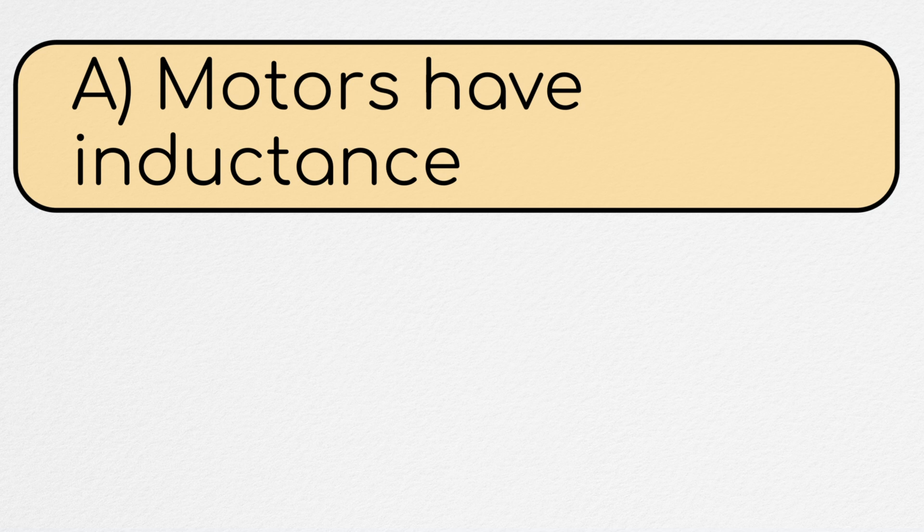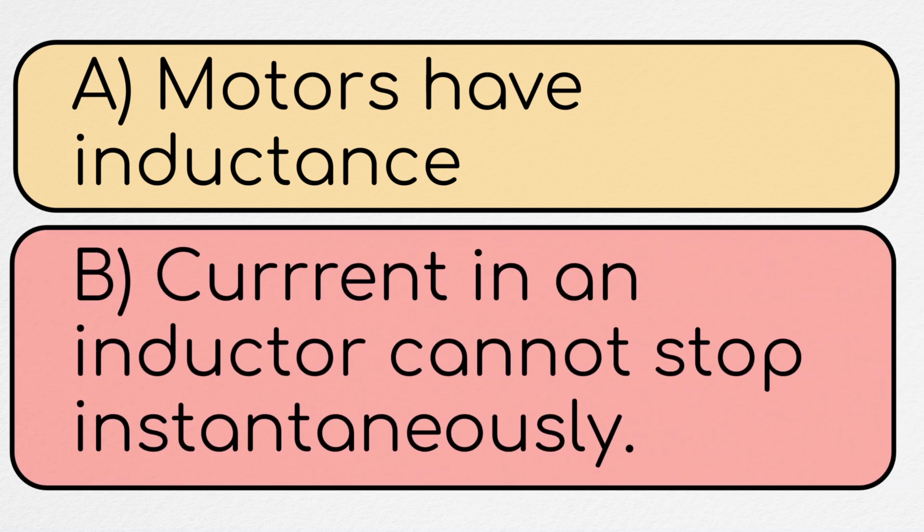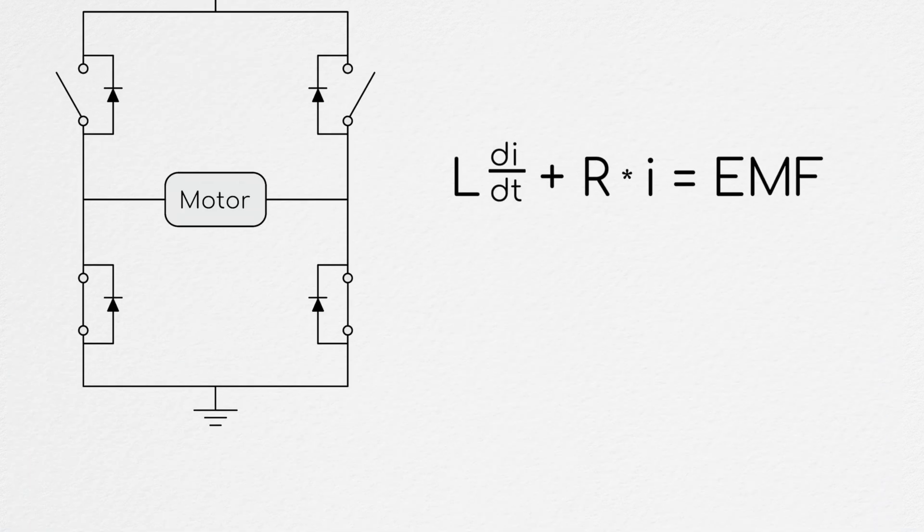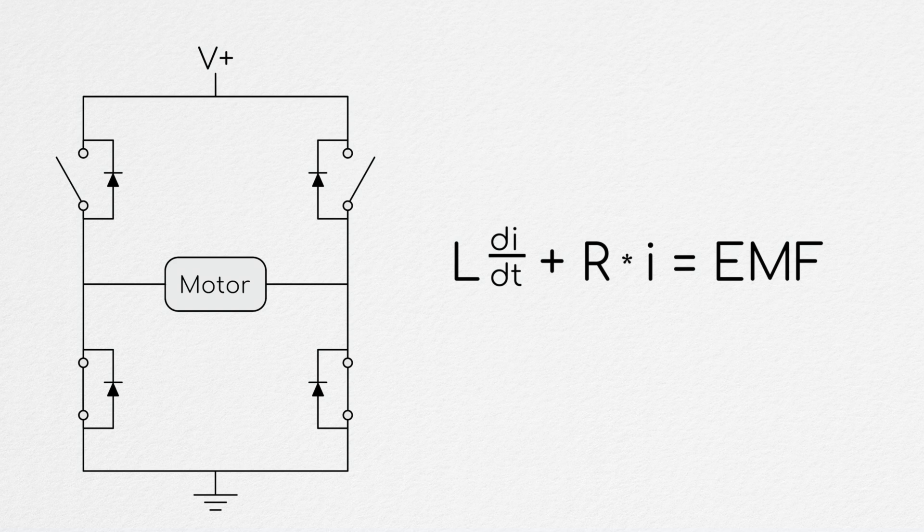However, we can use the facts that A, motors have inductance, and B, current cannot instantly stop when running through an inductor, in order to drive current back into the supply. Essentially, we'll PWM the MOSFETs of this system, such that for some portion of the PWM's period, the leads of the motor are shorted together, so that the motor's rotation can build up a current.